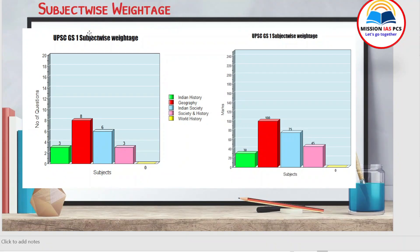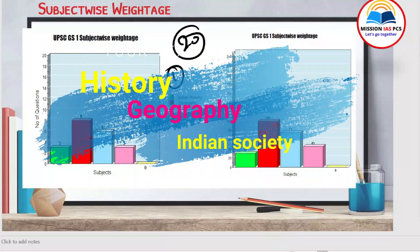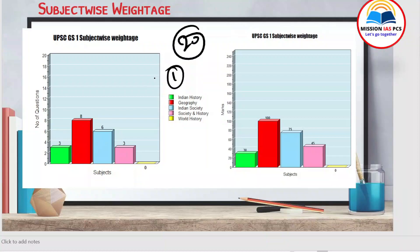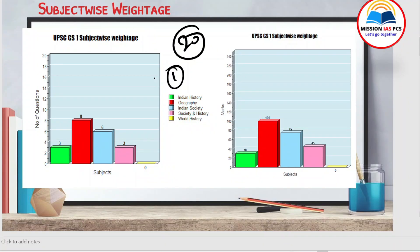That preparation will help you focus on subjects and topics that will be more important from the examination point of view. GS Paper 1 has a total of 20 questions worth 250 marks, covering four important subjects: history, geography, Indian society, and world history. This year UPSC focused more on geography, especially the dynamic part — only one question came from static geography, while all other geography questions were mostly dynamic. To answer them, you still need a strong conceptual static understanding.